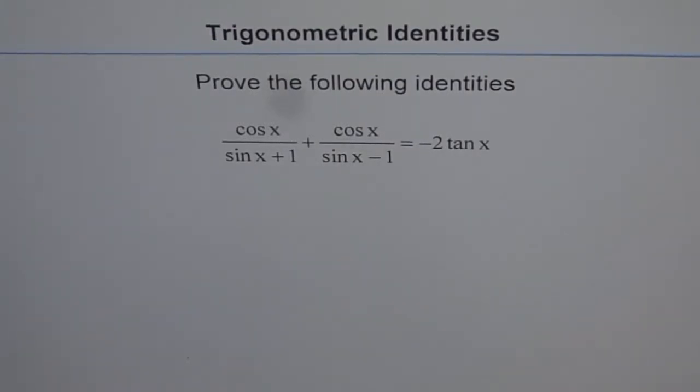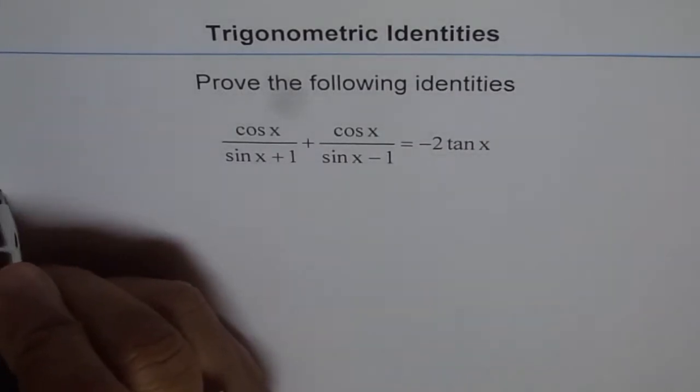We need to prove the trigonometric identity: cos x over sin x plus 1, plus cos x over sin x minus 1, equals negative 2 tan x. So let's start with the left side and see what we get.